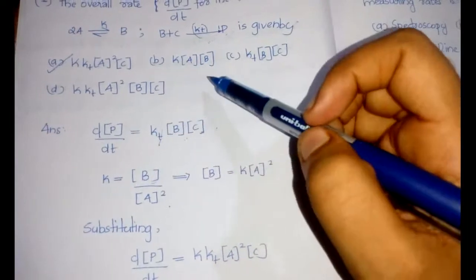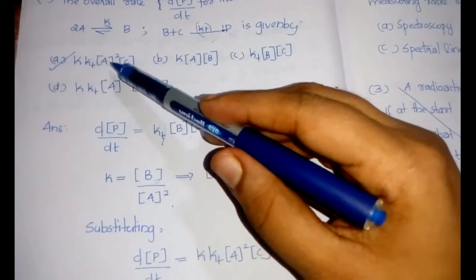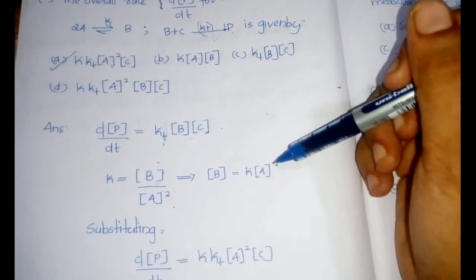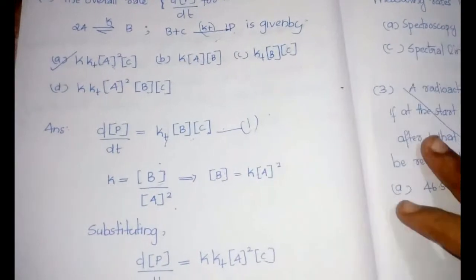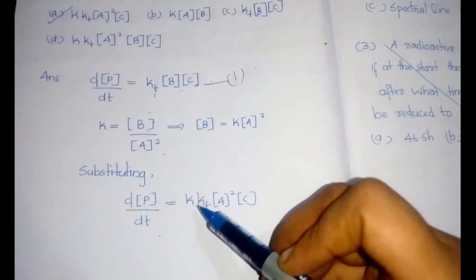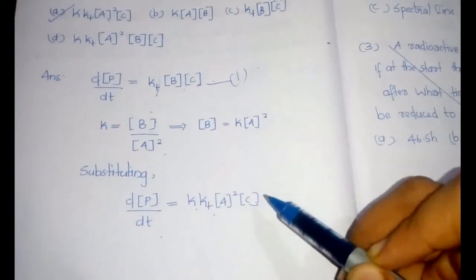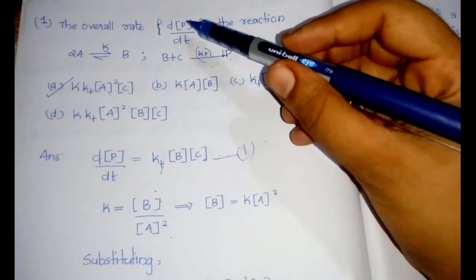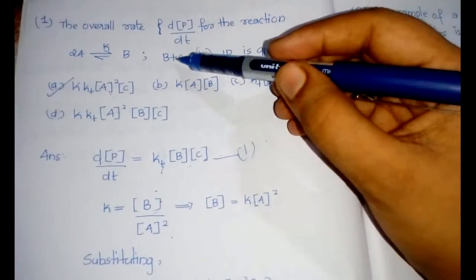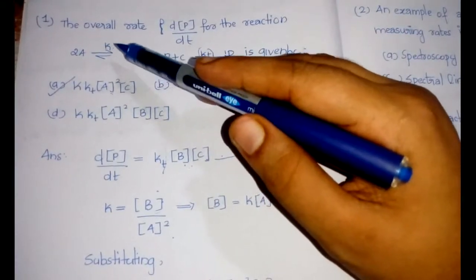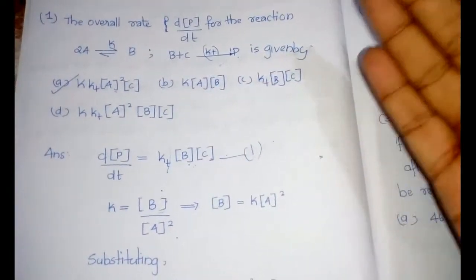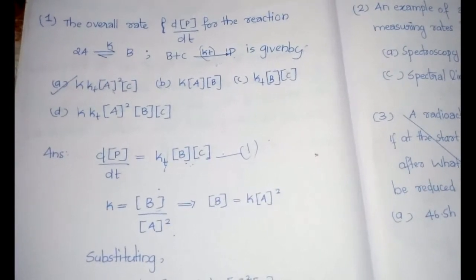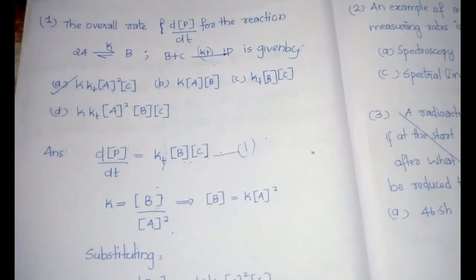We can replace [B] in our equation: from the equilibrium expression, [B] = K × [A]². Substituting into the rate equation gives dp/dt = K × k_t × [A]² × [C], which is option A. The strategy: first write the rate equation for the product, then use the equilibrium expression to replace any intermediate concentration, and substitute back into the primary equation.